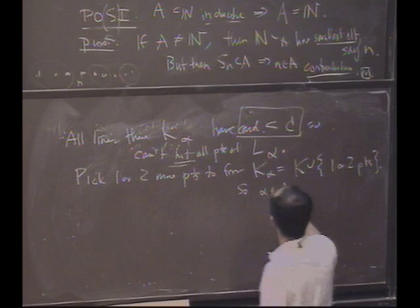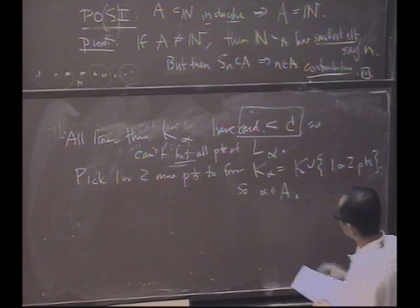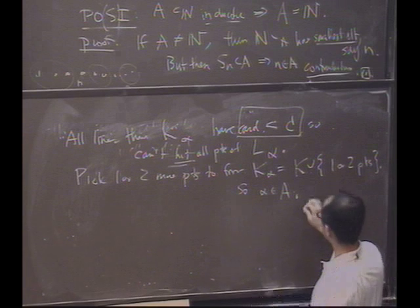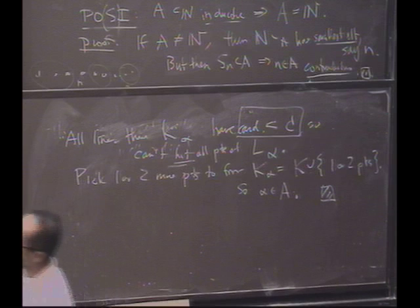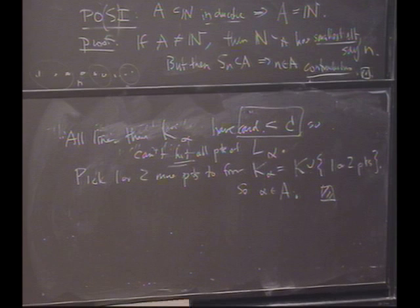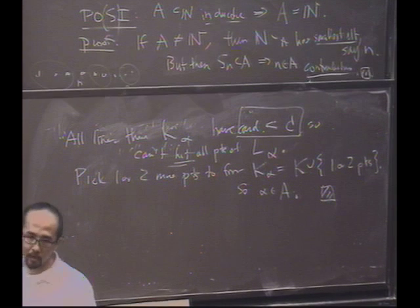So alpha is going to be in A. And we're done. So the end construction is, let's just look at the union of all the K_alphas for every alpha, and that will be the set that passes through every line twice.